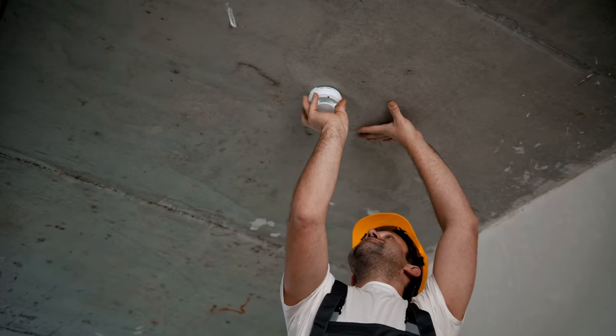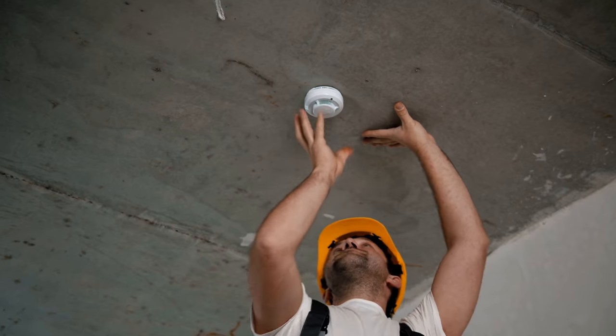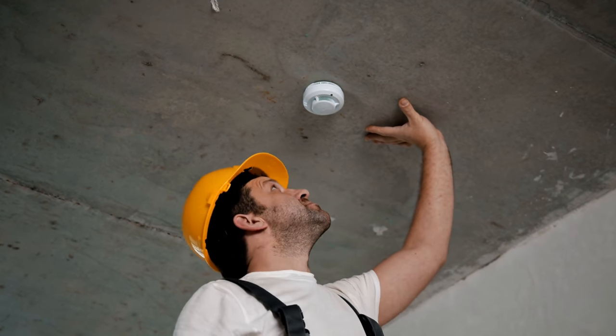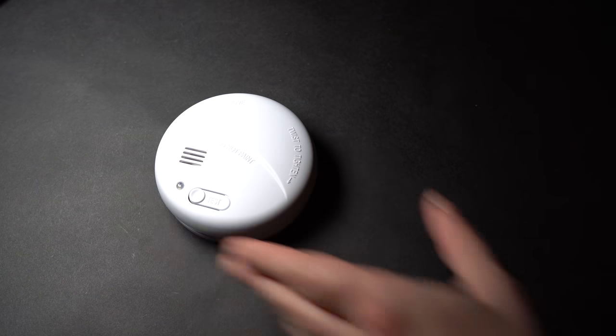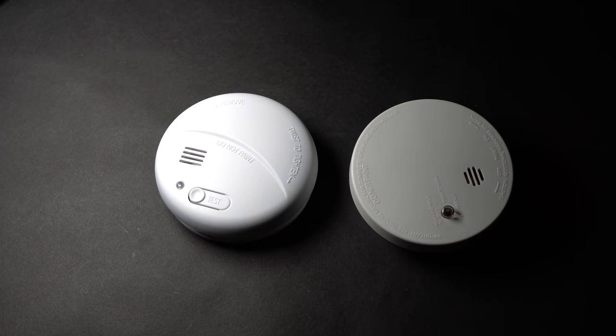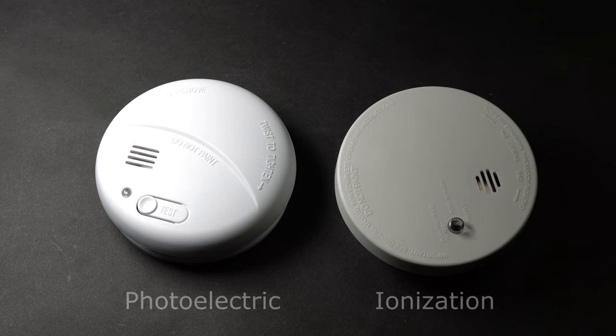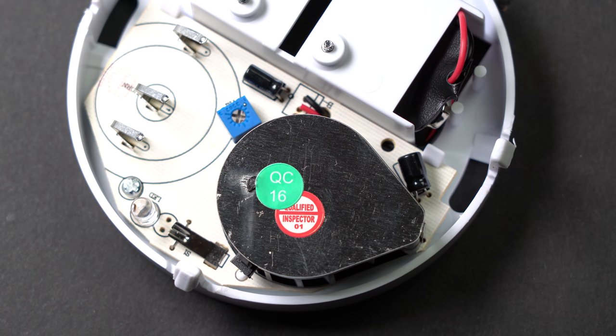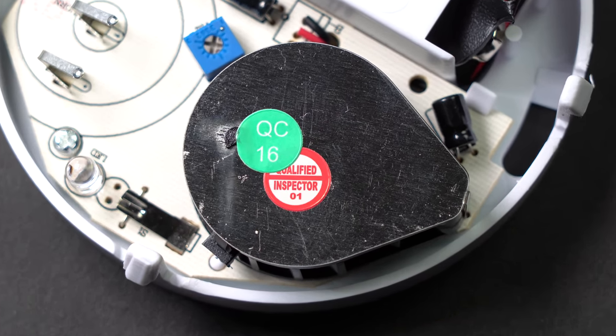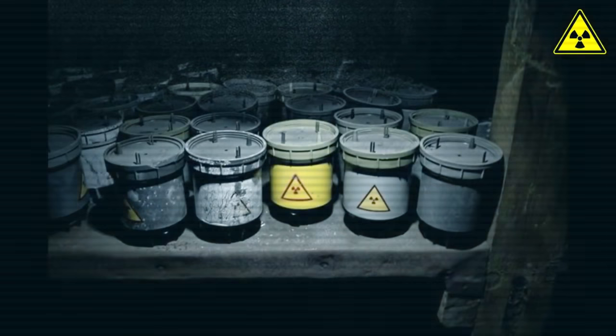I think all of you have smoke alarms at home. For example, in Estonia it is mandatory to have a smoke alarm in every flat. Based on their operation principles, there exist two basic types of smoke alarms: photoelectric and ionization type.